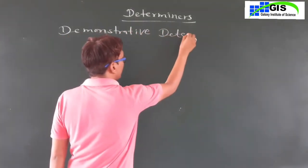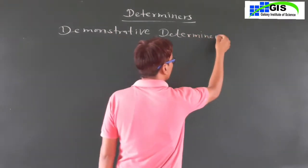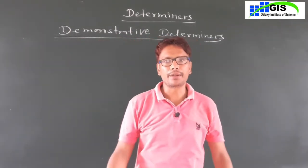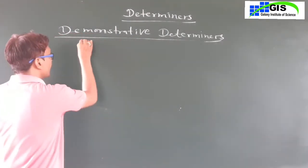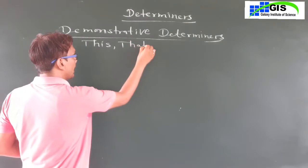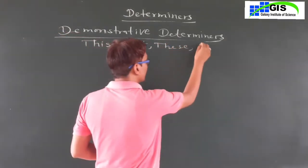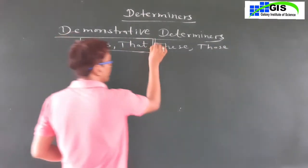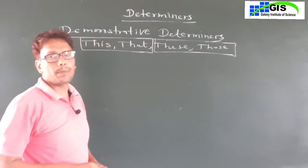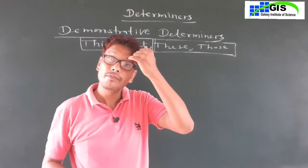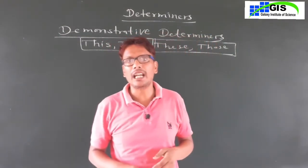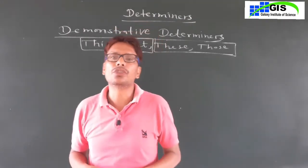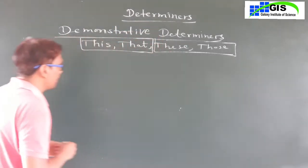Aaj hum padhte hain demonstrative determiners. Demonstrative determiners mein aate hain: this, that, these, aur those. Hum inका prayog kahaan karte hain? Demonstrative ka matlab hota hai pradarshankari — jo indicate karte hain, point karte hain ek doosri cheezon ko.